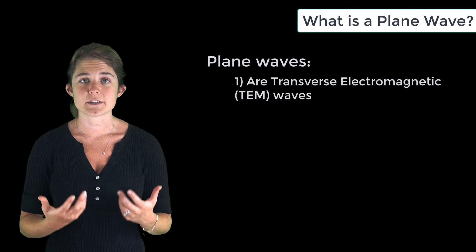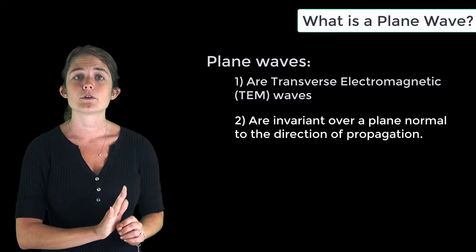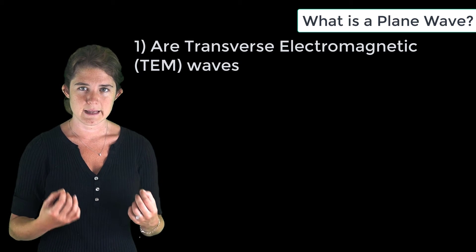Plane waves are transverse electromagnetic waves that are invariant over a plane normal to the direction of propagation. Transverse electromagnetic, or TEM waves,